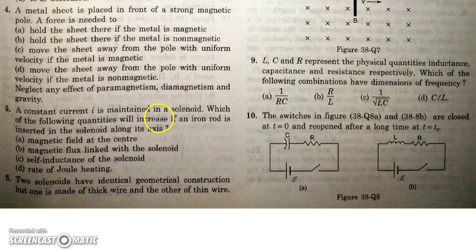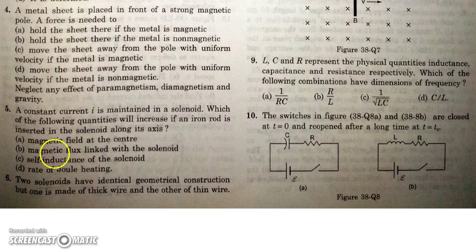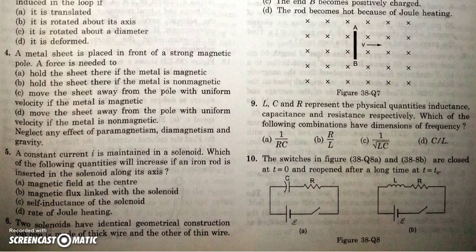In the next question, a constant current I is maintained in a solenoid. If an iron rod is inserted along its axis — since iron is a ferromagnetic substance — the magnetic field will obviously increase, the flux will also increase, and the self-inductance will increase because a factor μᵣ greater than 1 for iron is multiplied to the inductance. However, Joule heating remains the same as there is no change in resistance and the current is maintained, so I²R does not change. So A, B, and C all change.